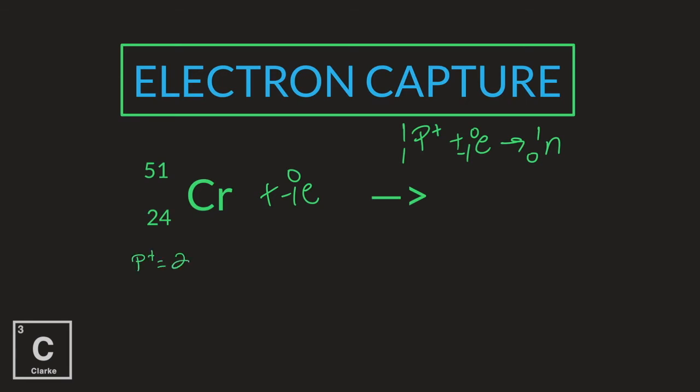So we have 24 protons here because it's number 24. If we want to figure out the number of neutrons, we would have to subtract. Because remember, protons plus neutrons is the mass number. So if you want the number of neutrons, you're going to take the mass number and subtract it by the proton number or the atomic number. And we're going to have 27. So let's see what we should have on the other side. Now remember, a proton is being turned into a neutron. So our proton number is going down by one. So instead of having 24 protons, we're going to have 23 protons. And since a proton is being turned into a neutron, we're going to have one more neutron that gives us 28 neutrons.